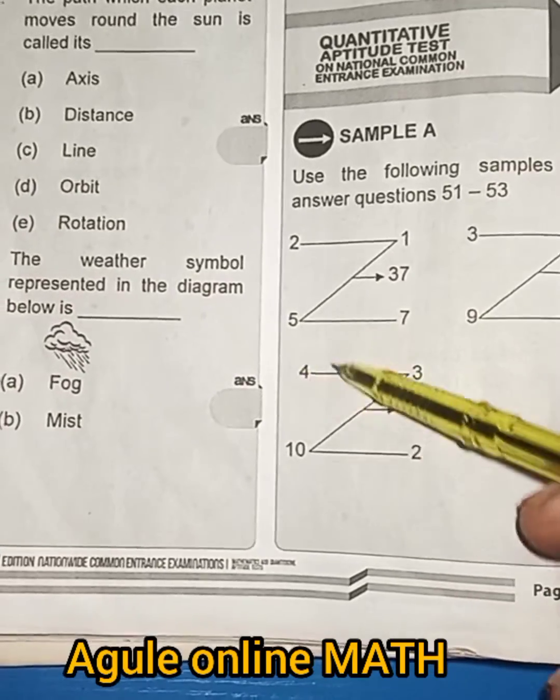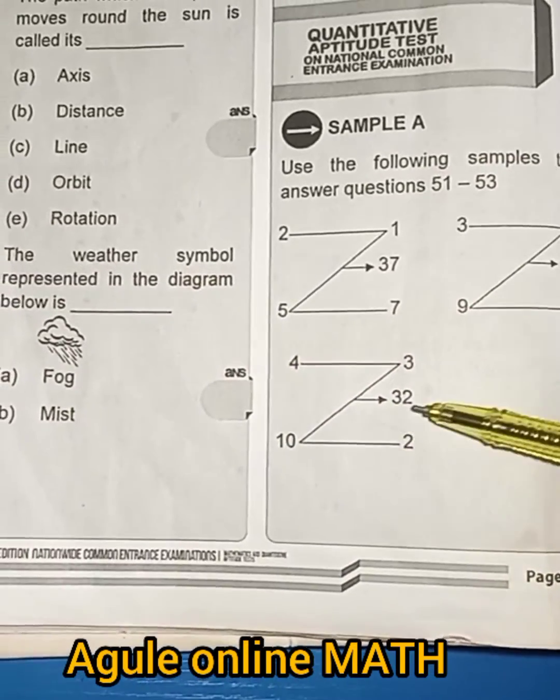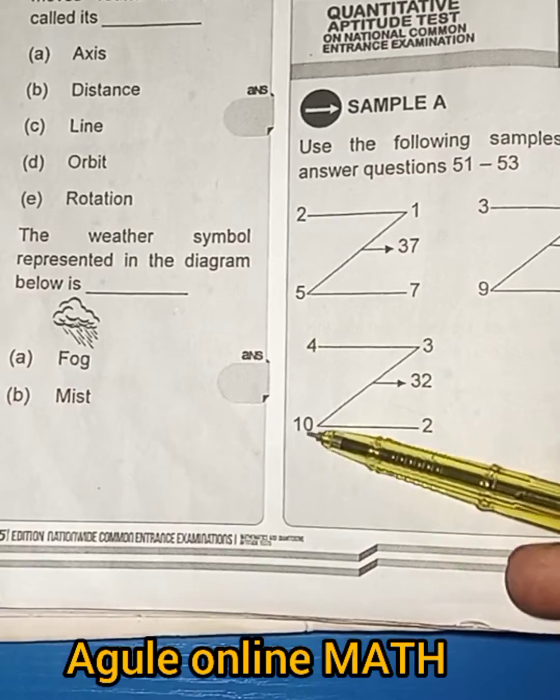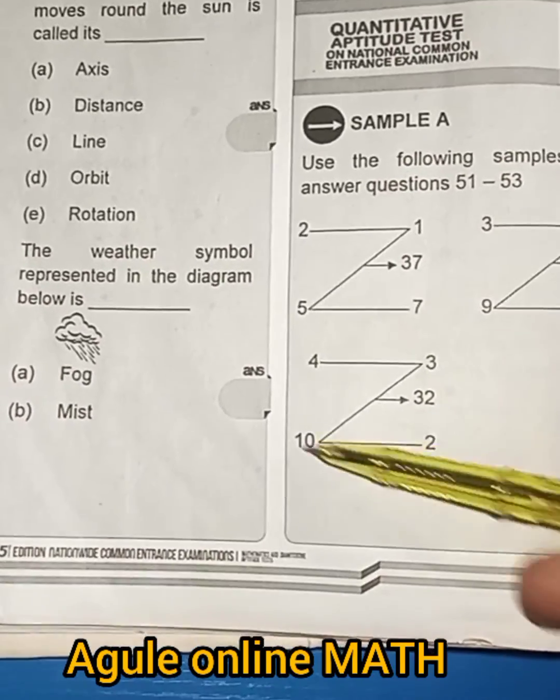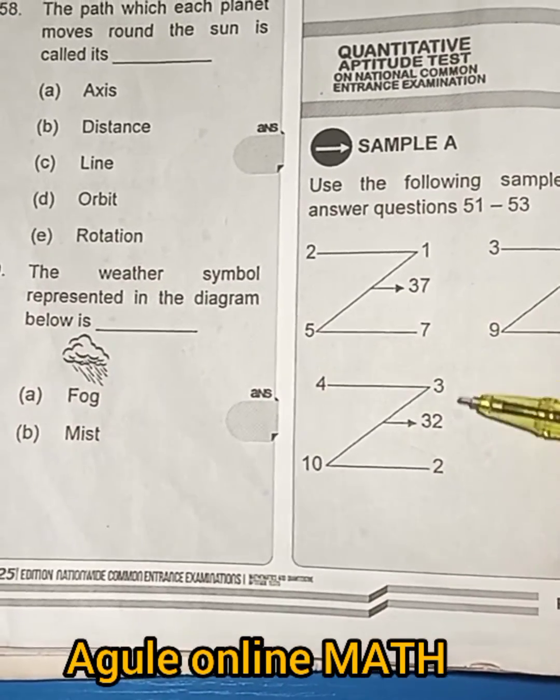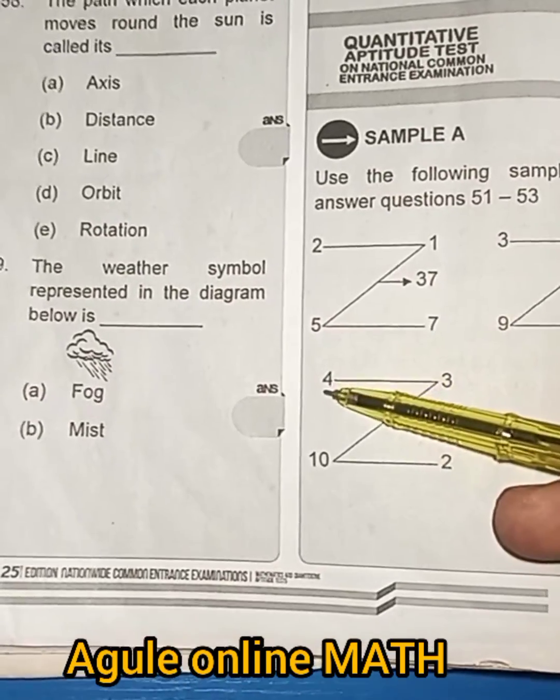So now, if you want to get maybe 4 here, what are you going to do? You do 32 minus 10 times 2, that is 32 minus 20. You're left with 12. That 12 divided by 3 here will give you 4.